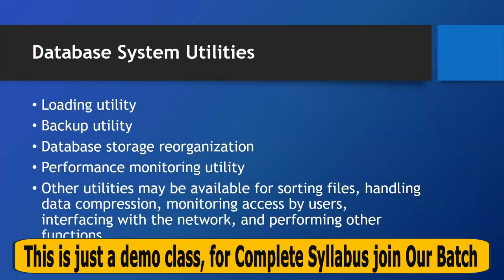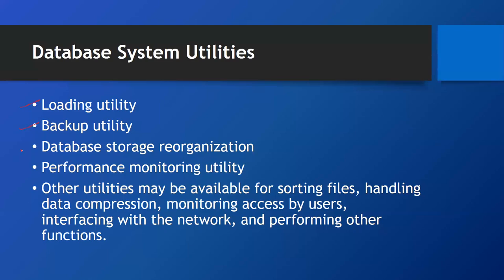The second thing is database system utilities. These include: loading utility, backup utility, database storage reorganization, and performance monitoring utility. Other utilities may also be available for sorting files, handling data compression, monitoring access by users, interfacing with the network, and performing other functions. Basic utilities like performance monitoring — showing how the database is performing via charts — and backup utility are very important, along with data organization and storage.